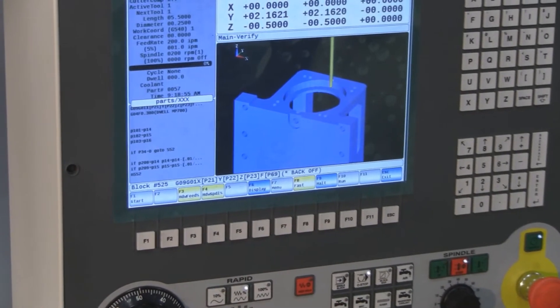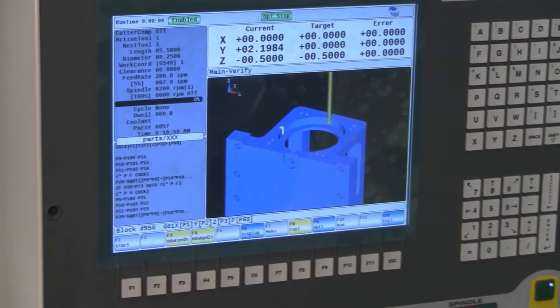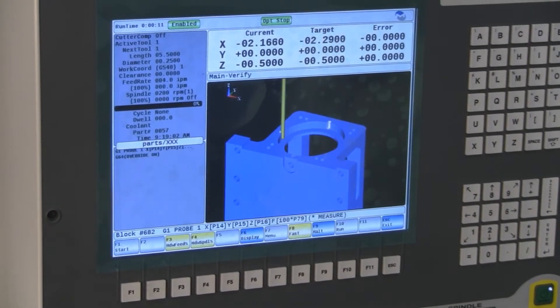Feed rate override is active during the verifying. So you can slow things down and watch it move through there. Or go fast if you want.